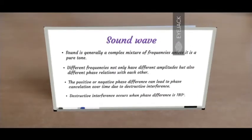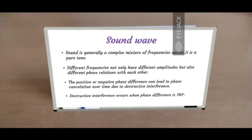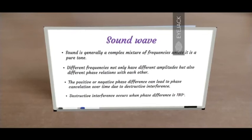So far we have observed sinusoidal oscillations of pure sine waves. But sound in general is considered a complex mixture of frequencies unless it is a pure tone. Different frequencies in that complex mixture not only have different amplitudes, but also different phase relationships with each other. Due to the complex mixture of different frequencies and different phase relationships, there can be a positive, negative, or zero phase difference, and this can lead to phase cancellation over time due to destructive interference. Destructive interference occurs when two waves are out of phase with a phase difference of 180 degrees or pi radians — it's not good because it removes the sound in question. When two waves are in phase with a zero phase difference, that leads to constructive interference, which unnecessarily boosts those frequencies in question.